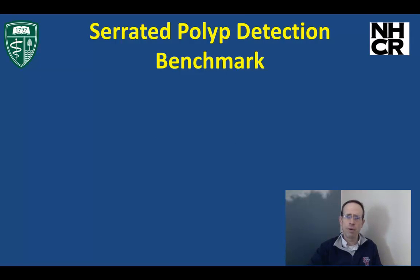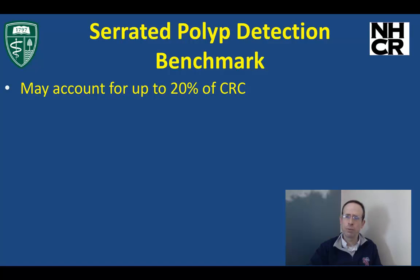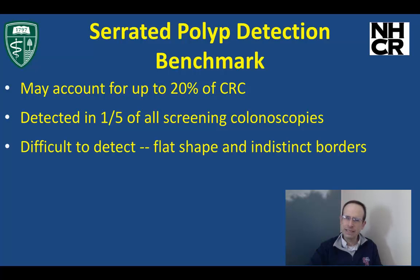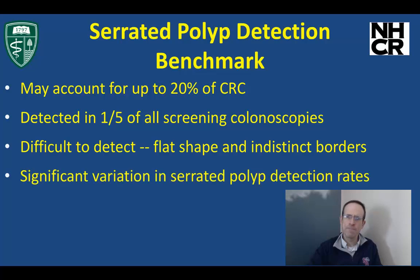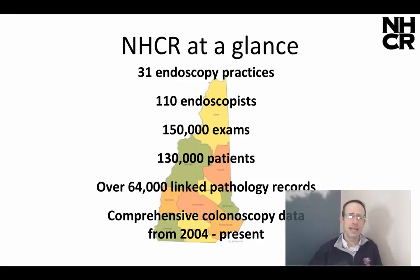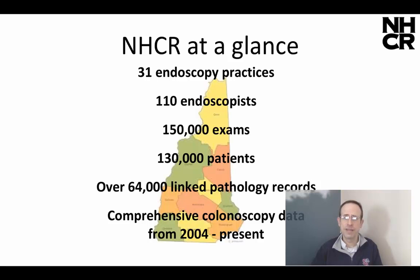Serrated polyp detection rate benchmarks would be important since this pathway may account for a large proportion of colorectal cancer. It's detected in a large proportion of screened colonoscopies, and because it's difficult to detect due to flat shape and indistinct border, there's significant variation in serrated polyp detection rates. Therefore, data to guide benchmark SDR recommendations is warranted. We felt that the NHCR would be a great resource due to the vast number of practices and endoscopies, including 150,000 exams and 130,000 patients. We've been collecting comprehensive colonoscopy data from 2004 to present, so we felt this would be a great resource to answer this question due to the ability for practice variation to provide generalizable data.